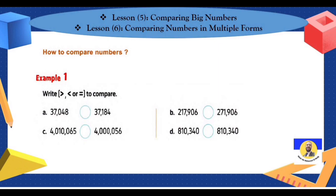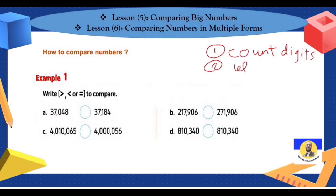I'll confirm some important points for you. First, to compare numbers, don't forget: number one — count the digits. If you have the standard form, count the digits first. Number two — when you start to compare, start from the left-hand side. Start from the leftmost digit — that's the digit that begins the comparison.